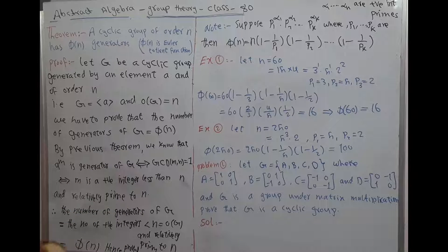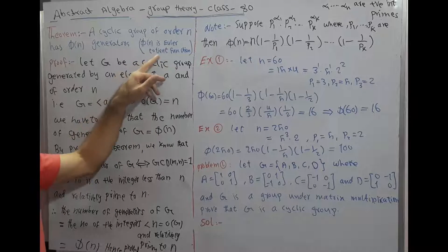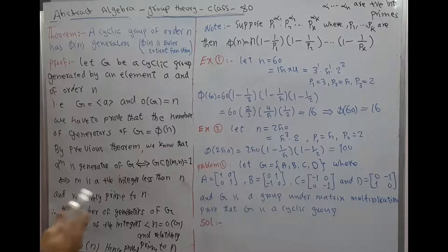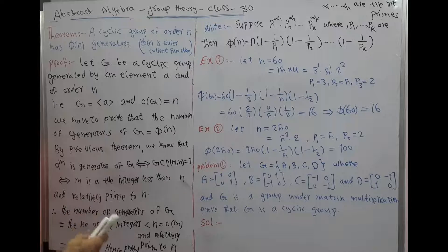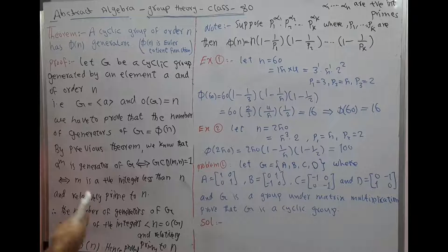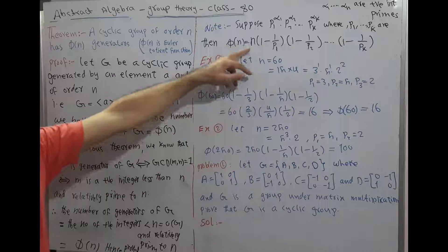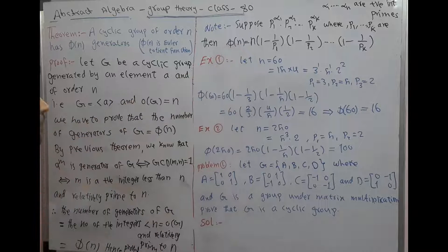The Euler totient function is the total number of integers less than n which are relatively prime to n, for a given number n.